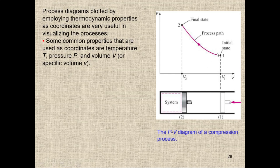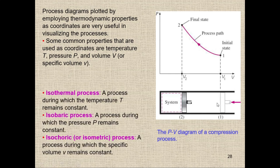We have the initial state here and the final state here — normally it is a piston-cylinder device moving from this point to this point. This is the path the system follows from point one to point two. We have different types of processes: isothermal (temperature remains constant), isobaric (pressure remains constant), and isochoric (volume remains constant). There are many other processes as well.